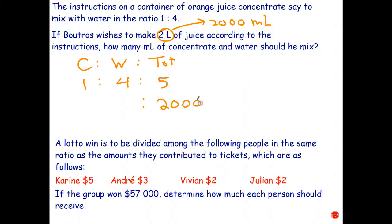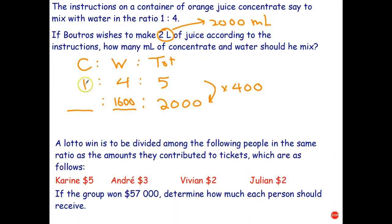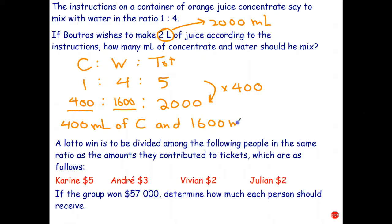So we write 2000 under the total. What do you multiply five by to get 2000? The answer is 400, since five times four is twenty — we just add the two zeros on. Four times 400 is 1600, one times 400 is 400. The final answer is: we need 400 milliliters of concentrate and 1600 milliliters of water. Quick check: 400 plus 1600 gives us the 2000 milliliters.